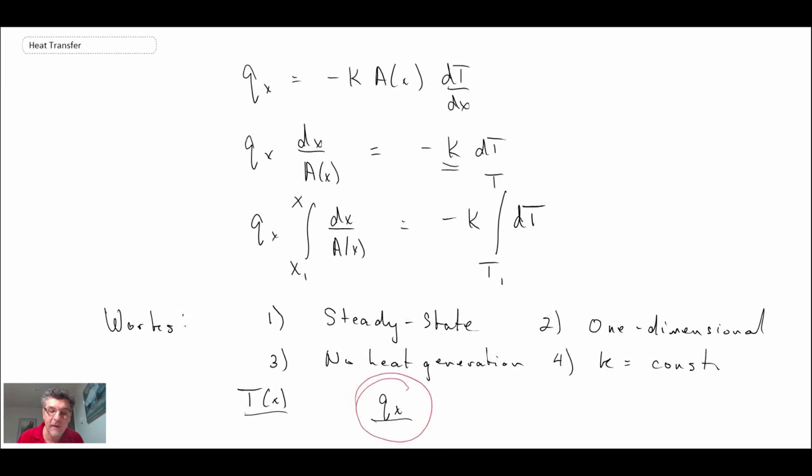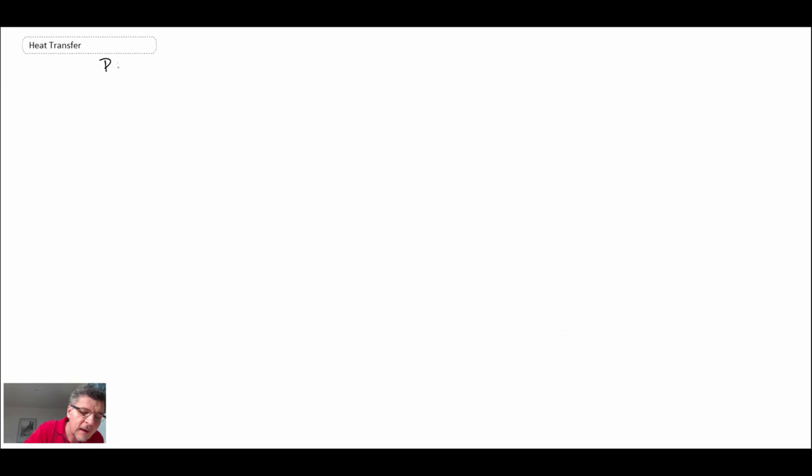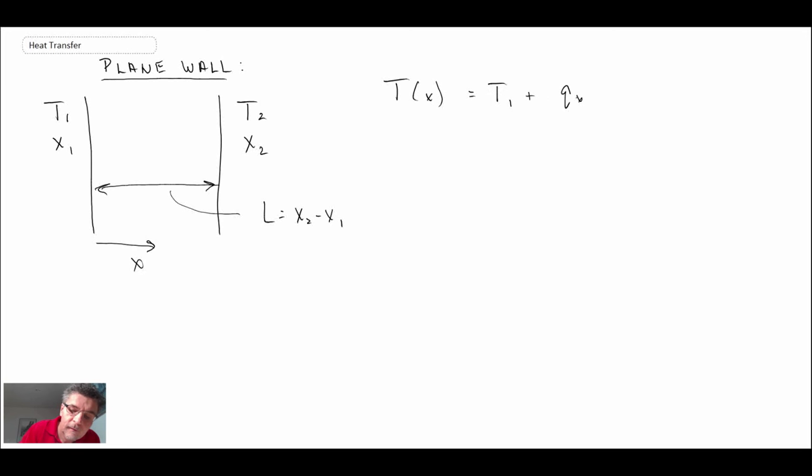So what I'm going to do now, I'm going to summarize the three different systems that we looked at. We looked at the plain wall. Well, it wasn't quite a plain wall. We looked at that example problem with a conical section, but this would be what you would get if you were to look at the plain wall. So I'll draw out a schematic. Now what we were able to determine was the temperature distribution, the heat flux, and so what we did for all three cases, we plugged q of x into T of x in order to give us the temperature distribution in the solid.